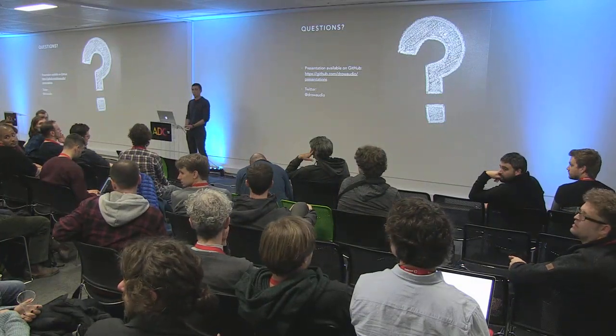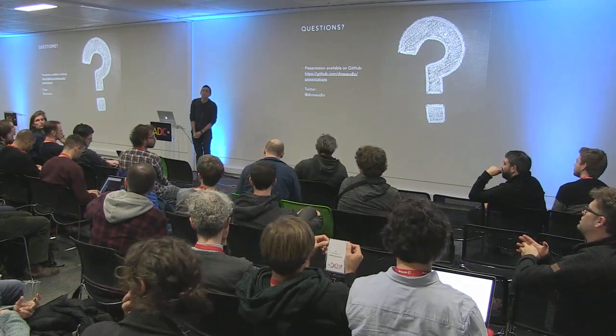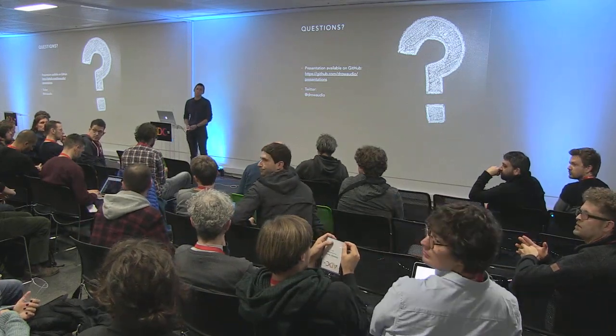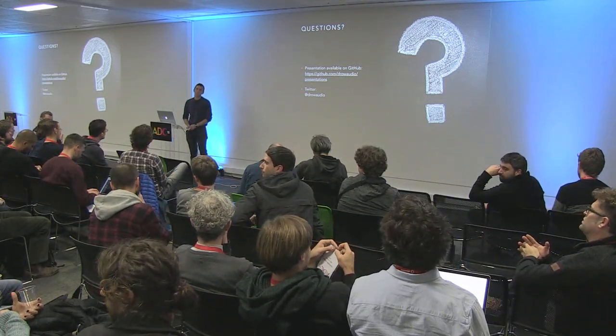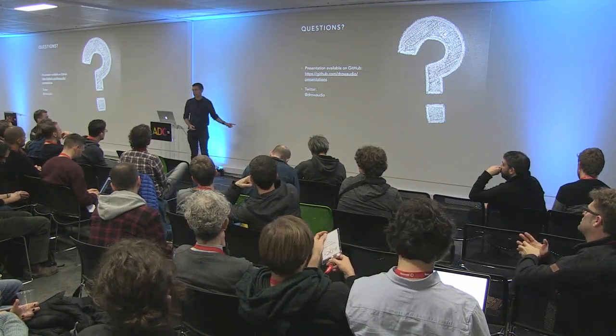Q: If something fails in random testing, is there a way to rerun the same tests with the same seed for debugging? A: In the version I showed there isn't, but the version on GitHub has an option to set the random seed as hex or binary. If you get a report with that seed listed, you can rerun the tests in debug mode to get more information. Thanks everyone.